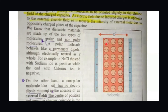This means that electrons are attracted toward the positive plate, and positive charges are arranged near the negative plate. As a result, a dielectric field is produced inside the dielectric in the opposite direction to the external field, because of the external field's influence.